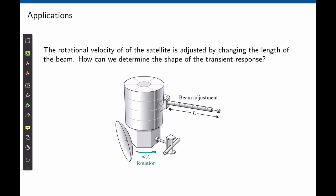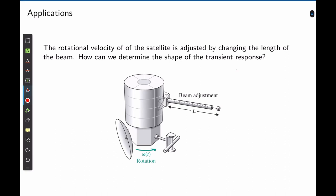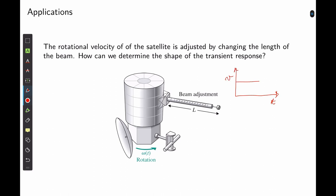Consider this example. The rotational velocity of the satellite is adjusted by changing the length of the beam. How can we determine the shape of the transient response? Consider that the satellite is rotating at a given speed and a step input is given to change its speed to a new speed. The speed will now move to the new speed following this transient response. What is the shape? Is it sinusoidal, exponential, or a combination of them?